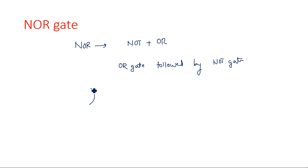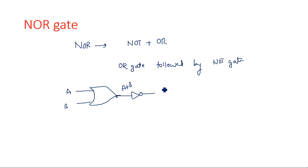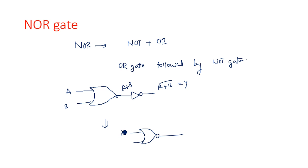If you see the symbol, the output should pass through an inverter. It is A plus B, and it should be A plus B whole bar, something like Y. The same symbol can be written in a provisional way. This is NOR gate AB and Y is equal to A plus B bar. The NOR gate symbol is the same as the OR gate symbol but additionally we have a bubble at the output.